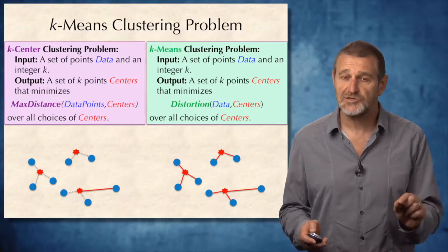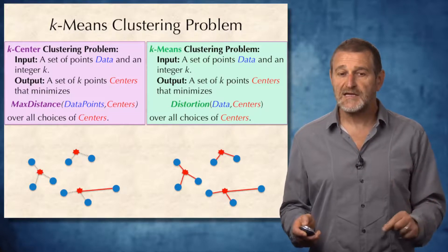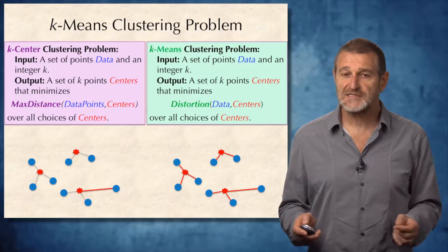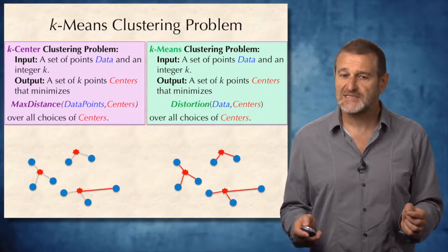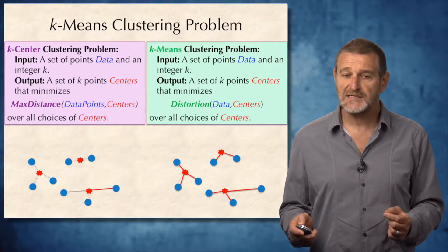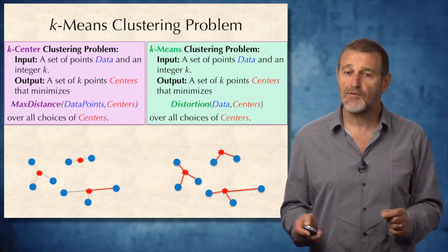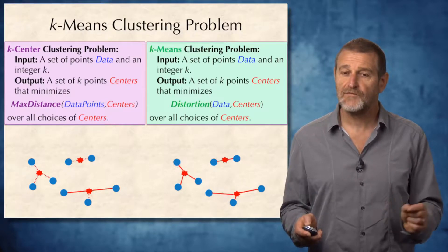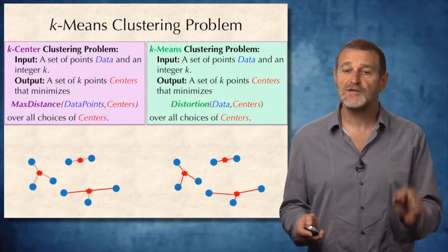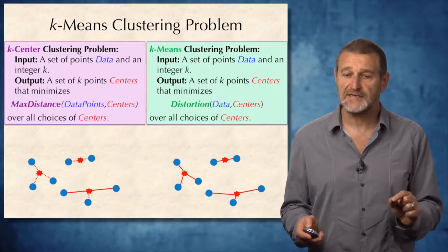The only difference between the k-center and k-means clustering problems is that k-means tries to optimize distortion rather than maximum distance. In this case, the centers shown in the slide are not good centers. After applying the k-center clustering problem they move to certain positions, and after applying k-means they move to different positions — note that the positions differ between the two approaches.